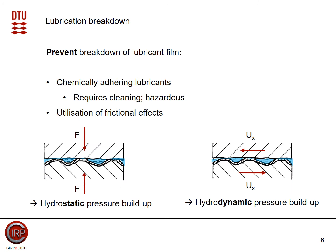There are two ways to prevent lubrication breakdown. One is chemically adhering lubricants, which are chemically adhered to the surfaces and therefore tend to break down less. However, those require expensive cleaning because they are chemically adhered to the surface, and in some cases they are also hazardous — which is again undesirable. However, we could also use frictional effects.